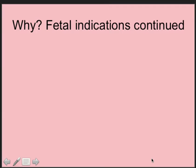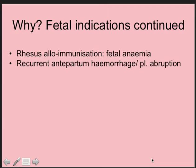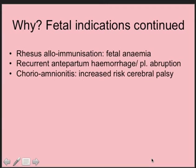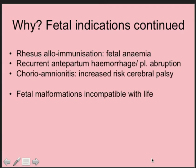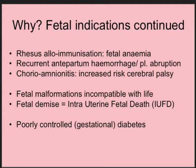Continuing with fetal indications, there are a few more: rhesus alloimmunisation with signs of severe fetal anaemia closer to term; recurrent antepartum haemorrhage, quite often caused by small placental abruptions; chorioamnionitis, which is a clear-cut indication to deliver because waiting increases the risk of neonatal sepsis and also cerebral palsy; fetal malformations incompatible with life; fetal demise or intrauterine fetal death; and poorly controlled gestational diabetes, which is associated with a higher risk of intrauterine fetal death, likely due to metabolic reasons.